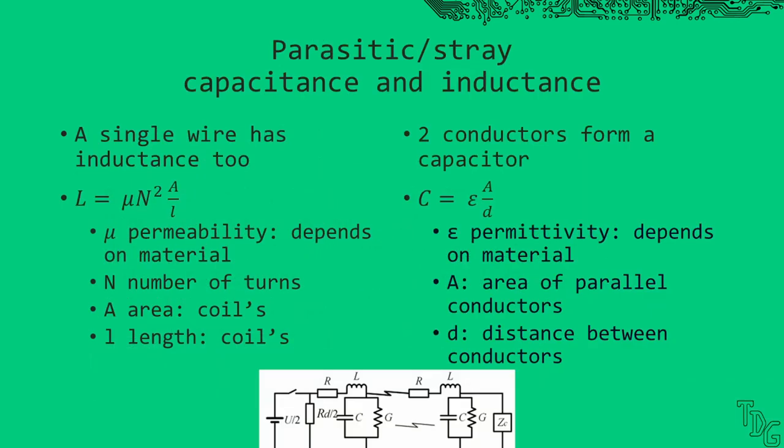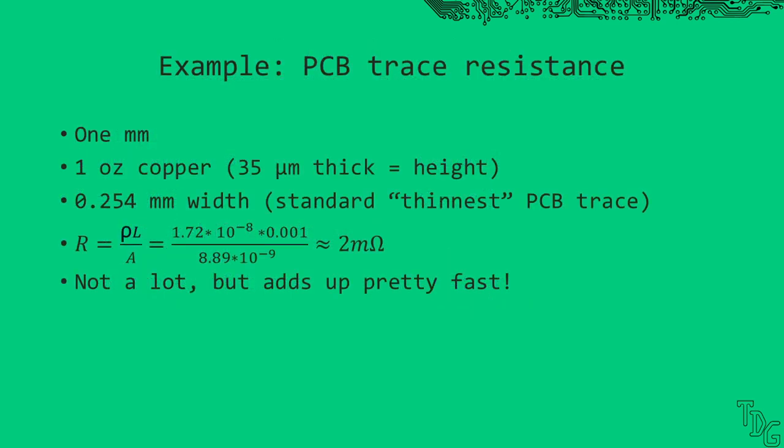But we don't stop here. We have some other unwanted parameters: capacitance and inductance. And we can't avoid, just minimize them by smart design. Every piece of wire and trace has some inductance, just pretty low. It depends on the core material filling the inductor, usually air in case of most PCB traces, the number of turns, that's one for a single wire or trace, the area and the length of the coil. Also, if we put two conductors next to each other, congratulations, you just made a capacitor. The capacitance depends on the material, or dielectric, between the traces, the area and the distance between the conductors. These parasitic values are really minuscule, but not zero.